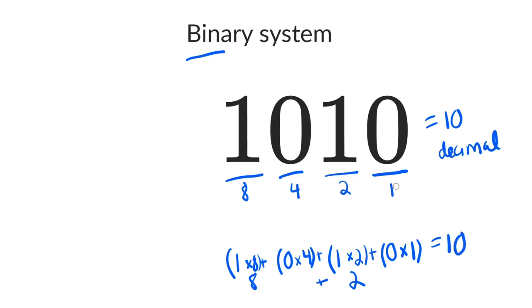In the decimal system, each of these places represented a power of 10, but in the binary system, each place represents a power of 2. The first bit is 2 to the 0 power, that's 1. The second bit is 2 to the power of 1, the first power, which is 2.